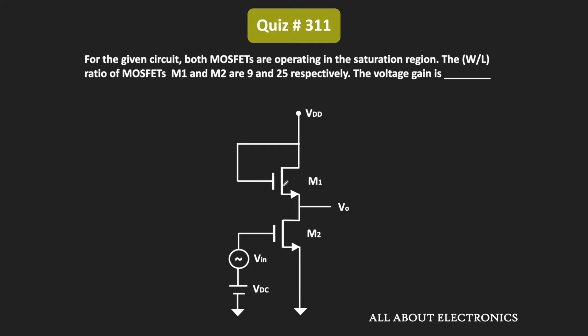Initially, if you observe this circuit, it appears that there is no resistor in this amplifier circuit. But if you see MOSFET M1, it is a diode-connected transistor. This diode-connected transistor is a technique to convert a three-terminal device into a two-terminal device, and in the AC equivalent circuit, it will appear as a resistor.